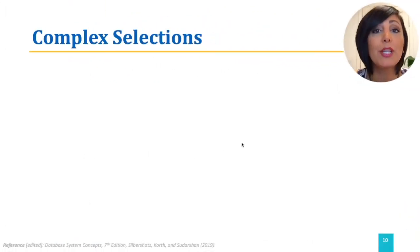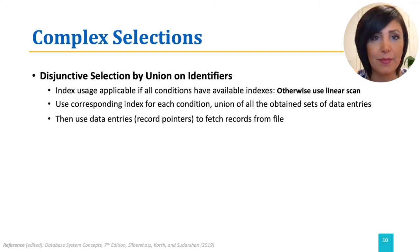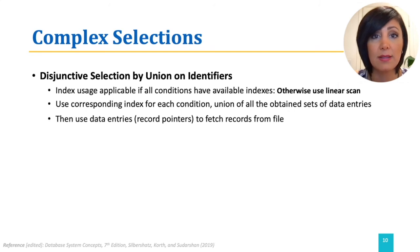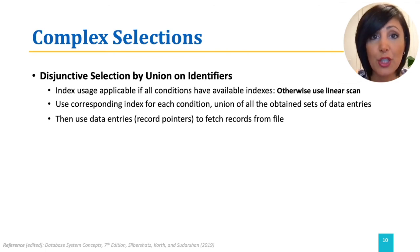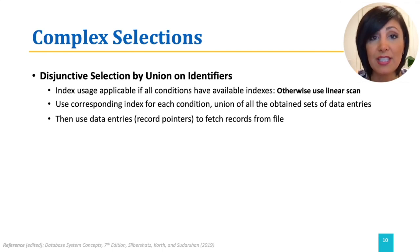Disjunctive selection can be handled by union of identifiers. Usage of indexes is applicable only if every single one of the conditions in the predicate has an available index. In this case, we use the corresponding index for each condition and take the union of all the obtained sets of data entries. Then we use those data entries, which are pointers to records, to fetch the actual data records from the file. Even if one index is not available, because of the nature of the union, we cannot use any of the indexes. In this case, a linear file scan to include tuples meeting the predicate condition should be used.